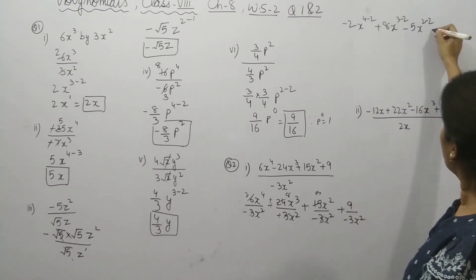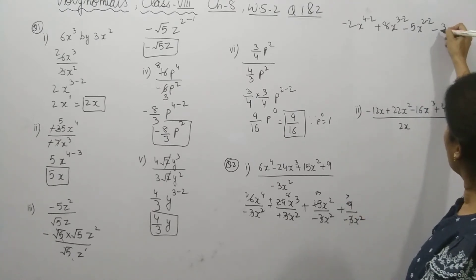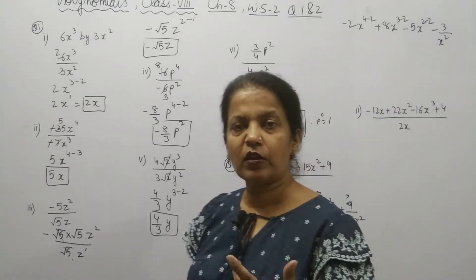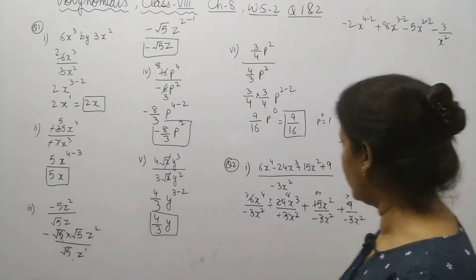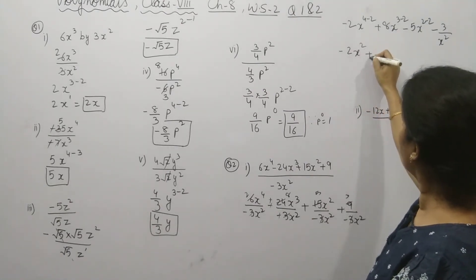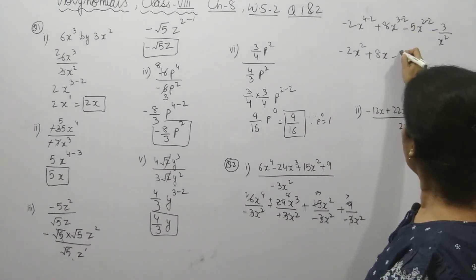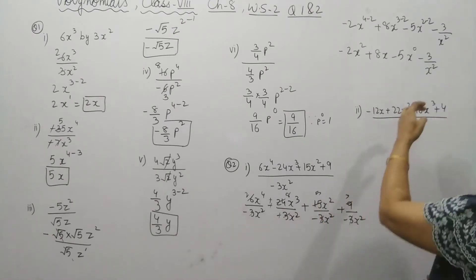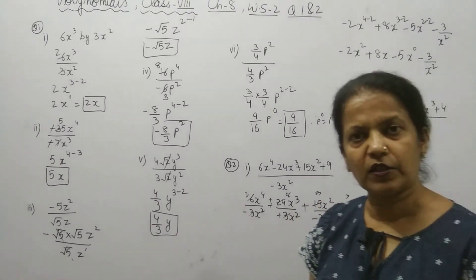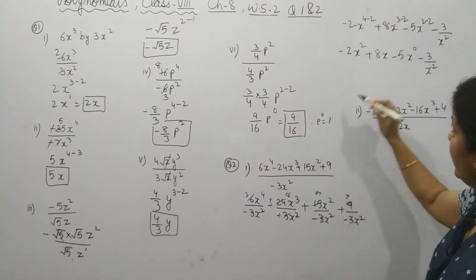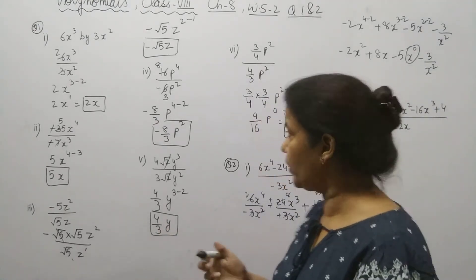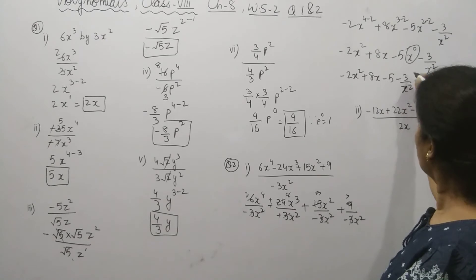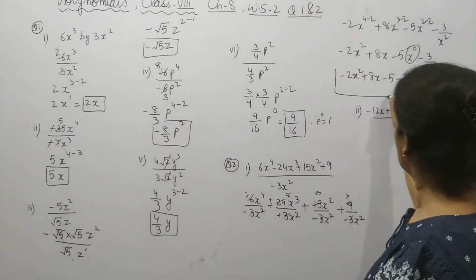Plus into minus gives minus, and it cancels to minus 3. Since on the upper side there is no variable, we keep it as is — no need to bring x² to the upper side. Solving: minus 2x power (2–2), which is x power 0, and x power 0 equals 1. So 8x power 1 minus 5, plus the last term gives the final answer with x⁰ substituted as 1.